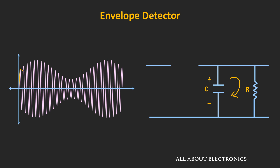At this point, the input voltage will once again cross the capacitor voltage, and the voltage at the anode of the diode will be greater than the cathode. The diode will once again act as a short circuit, conduct, and the capacitor will follow the input signal and get charged up to the peak voltage. Then the same procedure will repeat.